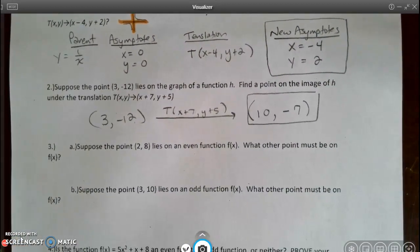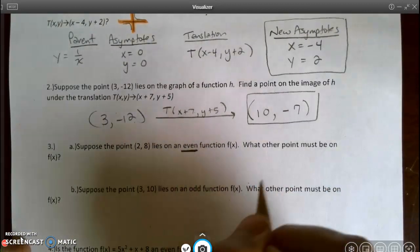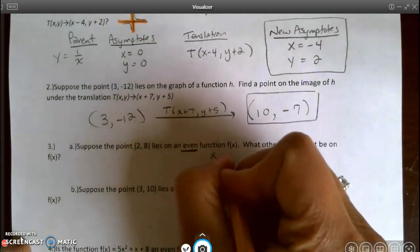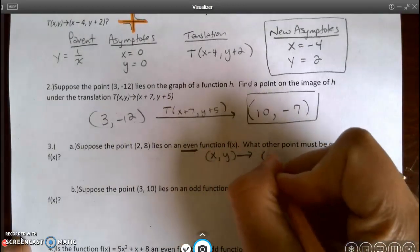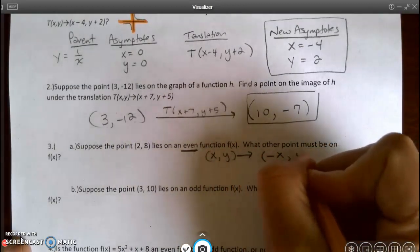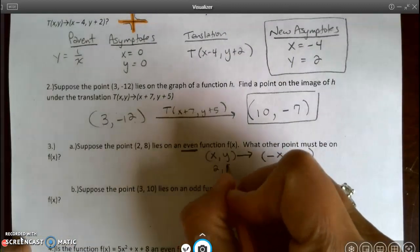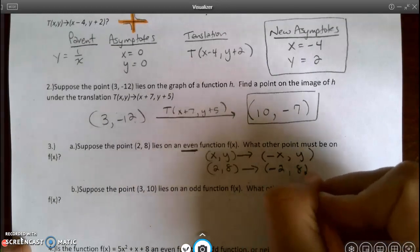Suppose the point (2, 8) lies on an even function. What other point must be on f(x)? When it's even, I have to remember that my x and y, when I reflect it over the y-axis, the x changes, but the y stays the same. So my (2, 8) is going to become (-2, 8).